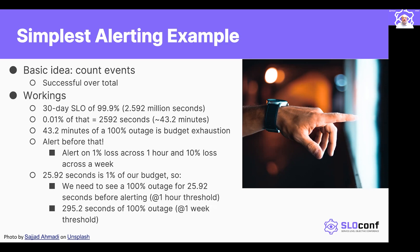Doing the simplest possible example: a basic idea with these kinds of alerts is you're counting events. Let's say it's a simple web server or transactional request-response system of some kind — you're keeping count of successfully responded-to requests over the total number of requests. Just looking at a very simple example, we pick a 30-day SLO of three nines for a particular system. That is 2.592 million seconds in total, and if we're picking three nines, 100 minus 99.9% of that is the budget that you have to go wrong, which is 2,592 seconds — in this case, about 43 minutes. So if you have 43 minutes of a 100% outage, then you have complete budget exhaustion.